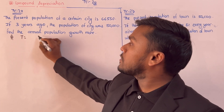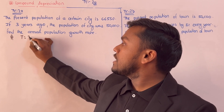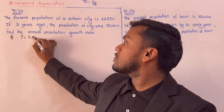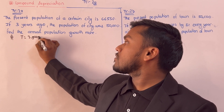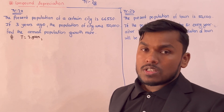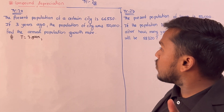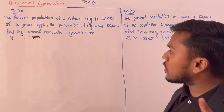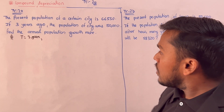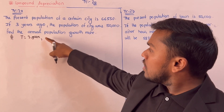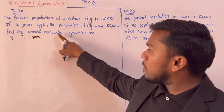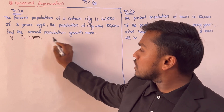Time is 3 years. Now the next question: find the annual population growth rate.